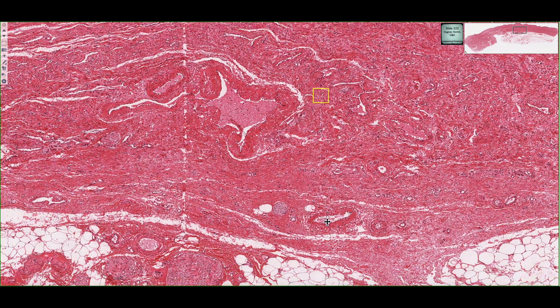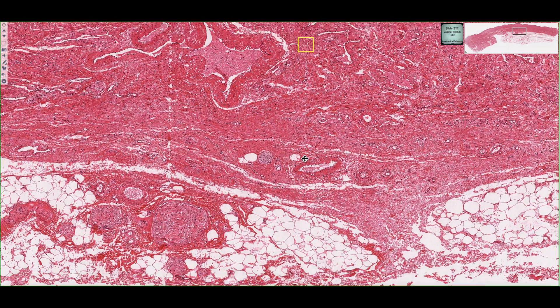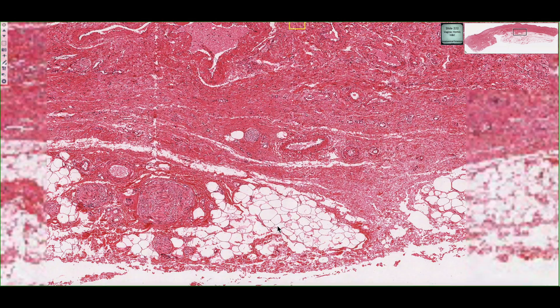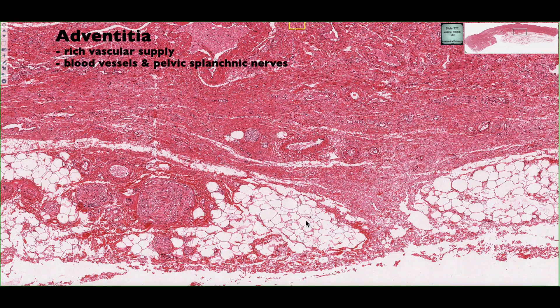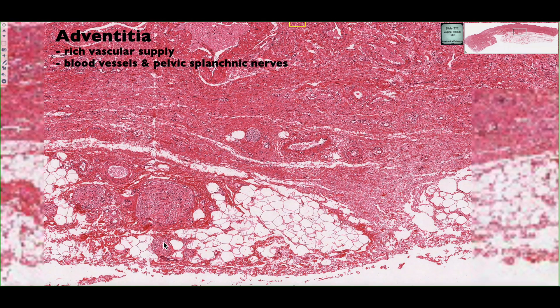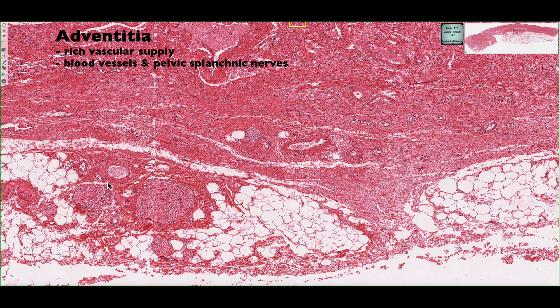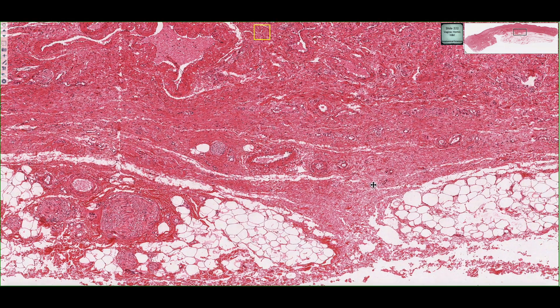The adventitia consists of adipose tissue, connective tissue, and here are some nerve fiber bundles that are found in the adventitia, as well as some blood vessels.